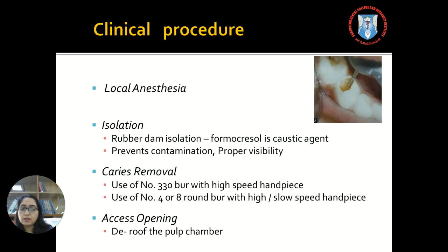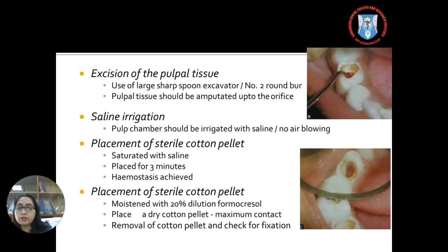After that, caries removal is done using a number 330 burr with a high-speed handpiece, and on approaching the pulpal floor, a slow-speed round burr is used. This is followed by access opening — conventional de-roofing of the pulp chamber — after the whole coronal pulp is exposed. It is excised with the help of either a sharp spoon excavator or a slow-speed round burr. All pulpal tissue tags should be completely removed; otherwise, bleeding will not be controlled, leading to improper fixation. After the chamber is cleaned, it is irrigated with saline and no air blowing should be done to prevent damage to the remaining radicular pulp.